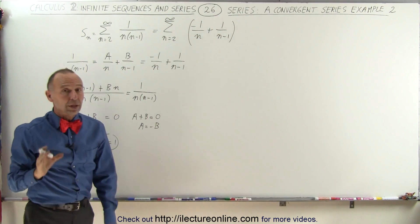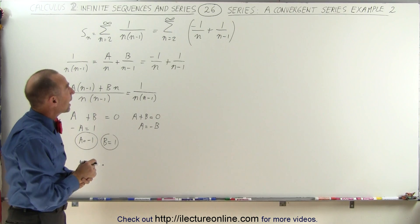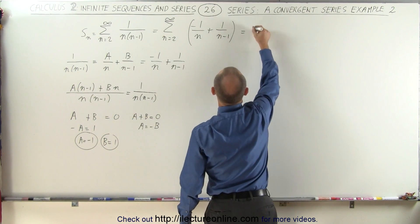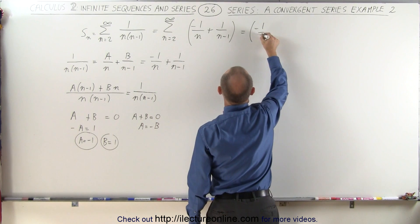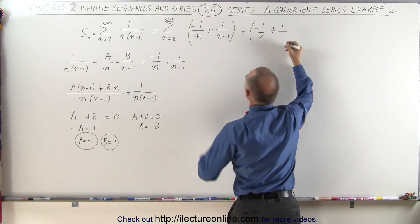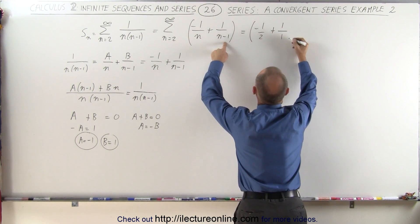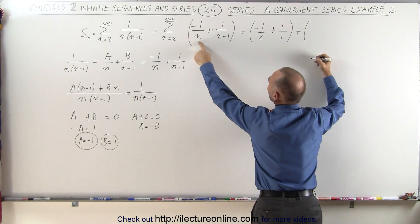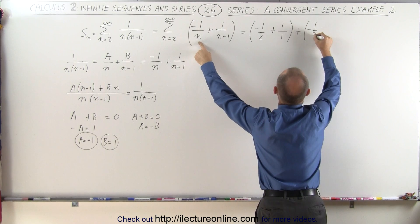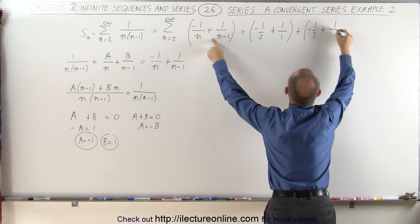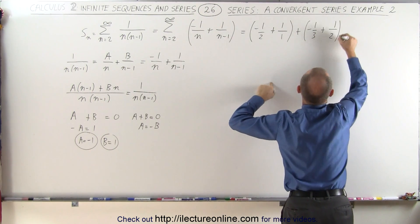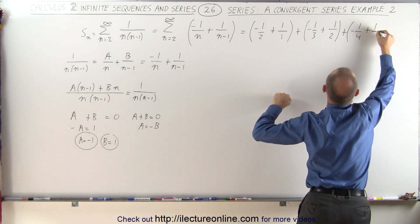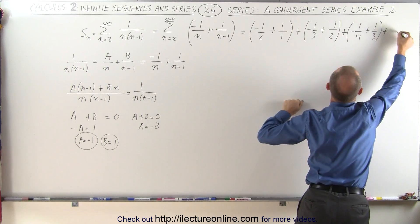Now we can start plugging in the various values starting with n equals 2. This becomes minus 1 over 2 plus 1 over 2 minus 1, which is 1. Then we add the next term, which when n equals 3 gives minus 1 over 3 plus 1 over 2. Then we add the next term, which is minus 1 over 4 plus 1 over 3, and so forth.